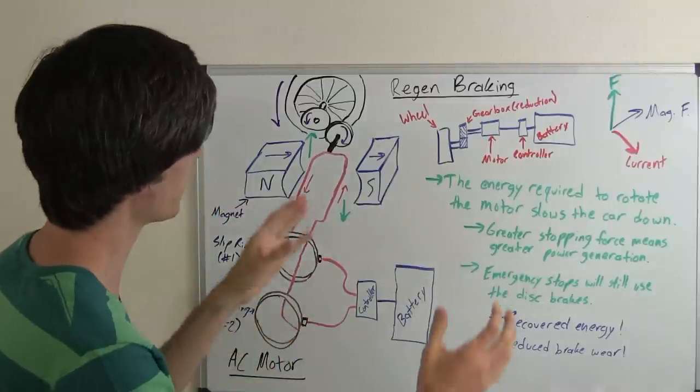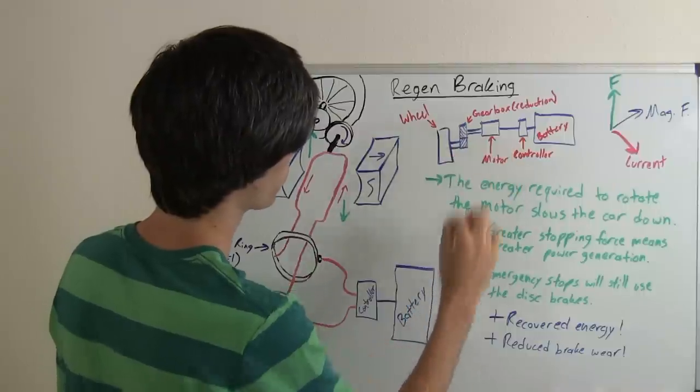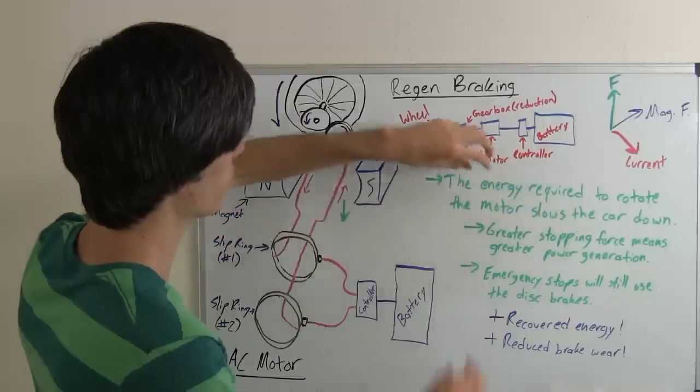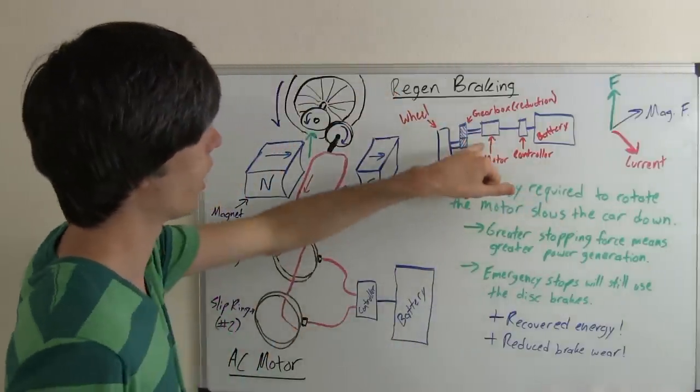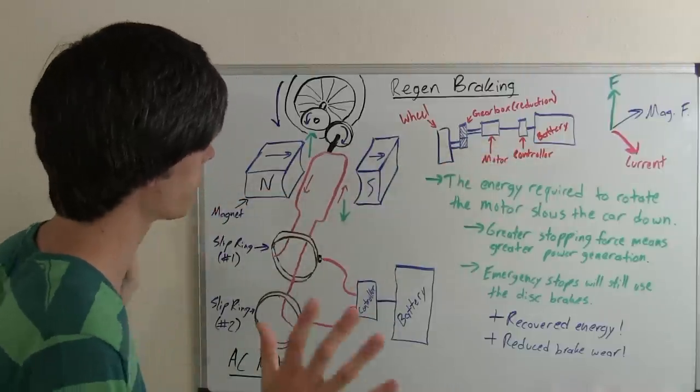The basic idea is you've got your wheel, you've got a gearbox which connects the wheel to the motor. It could just be a simple one-to-one gear or two gears so you can have a reduction. You've got a motor, you've got a controller, and you've got a battery. That's basically the whole system.